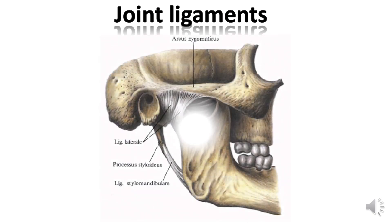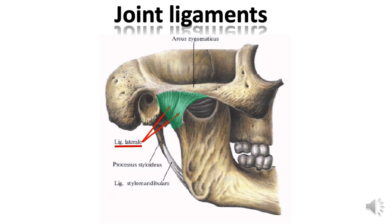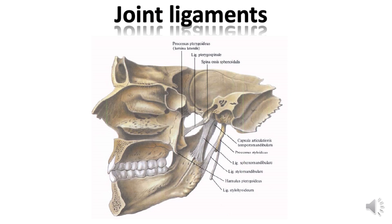Ligamentous apparatus of the temporomandibular joint. The ligamentous apparatus is represented by intra- and extracapsular ligaments. Ligaments regulate lateral movements and protrusion of the mandible. Near the temporomandibular joint there are three ligaments, of which only the lateral ligament, ligamentum laterale, which runs on the side of the joint from the zygomatic process of the temporal bone obliquely back to the neck of the condylar process of the lower jaw, is directly related to the joint. It inhibits the movement of the articular head to the back. The remaining two extracapsular ligaments, ligamentum sphenomandibulare and ligamentum stylomandibulare, lie away from the joint and are artificially allocated sections of the fascia, forming a kind of loop that helps to suspend the lower jaw.